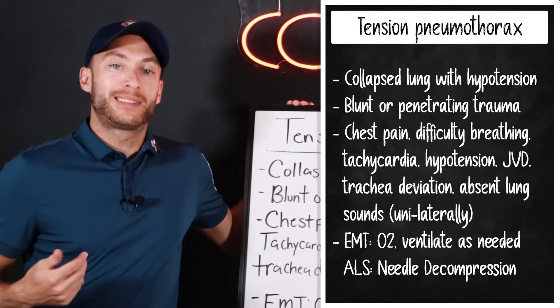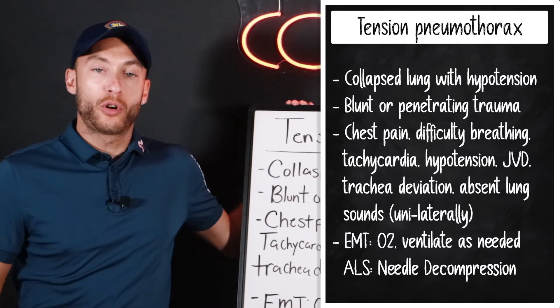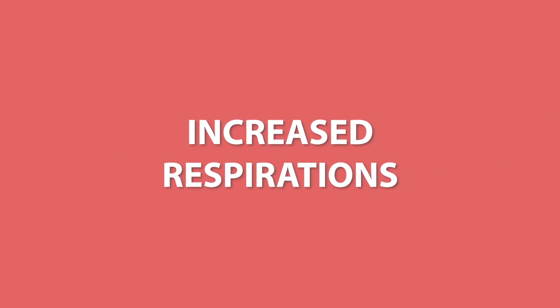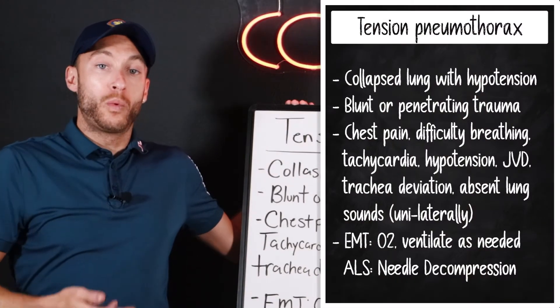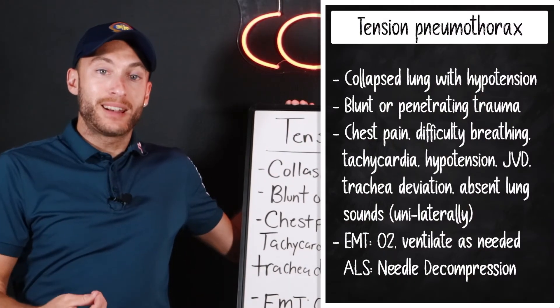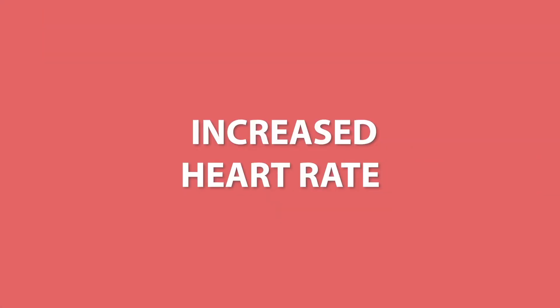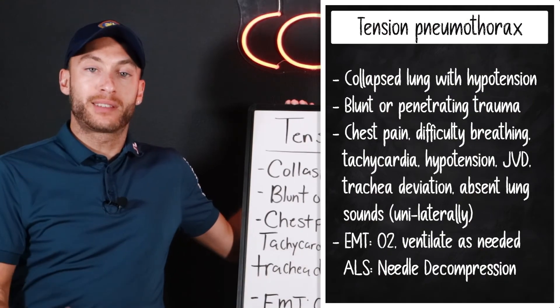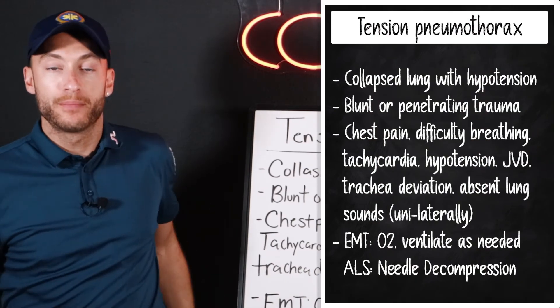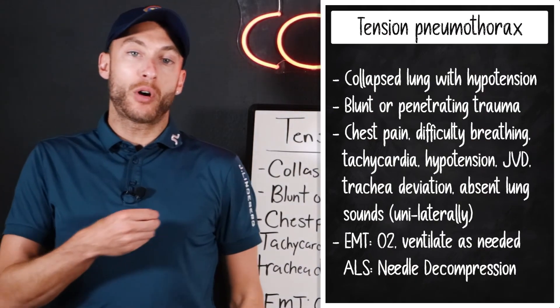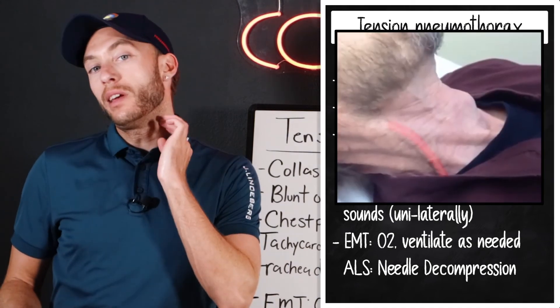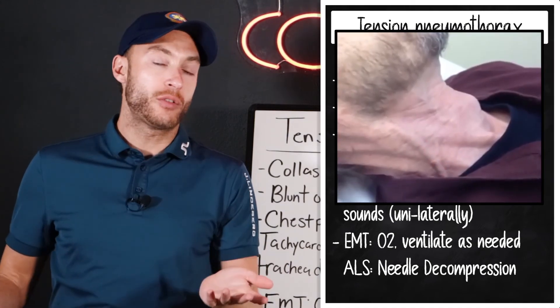The main signs and symptoms of tension pneumothorax are severe chest pain, difficulty breathing, and increased respirations. We're also going to have an increase in heart rate. You want to look out for hypoxia — SpO2 is going to be low. JVD: anytime the heart fails as a pump, we get JVD in the neck, and it can be on either side.